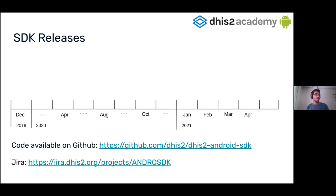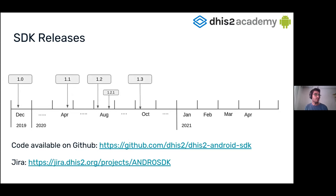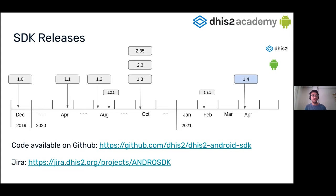The SDK was released about one and a half years ago, so it's quite a new product. We have had four versions: 1.1, 1.2, and 1.3 last year. Version 1.3 was important because it was the first where the release cycle of DHIS2, the capture app, and the SDK were aligned. Most recently, version 1.4, capture app 2.4, and DHIS2 2.36 were aligned and released at the same time.